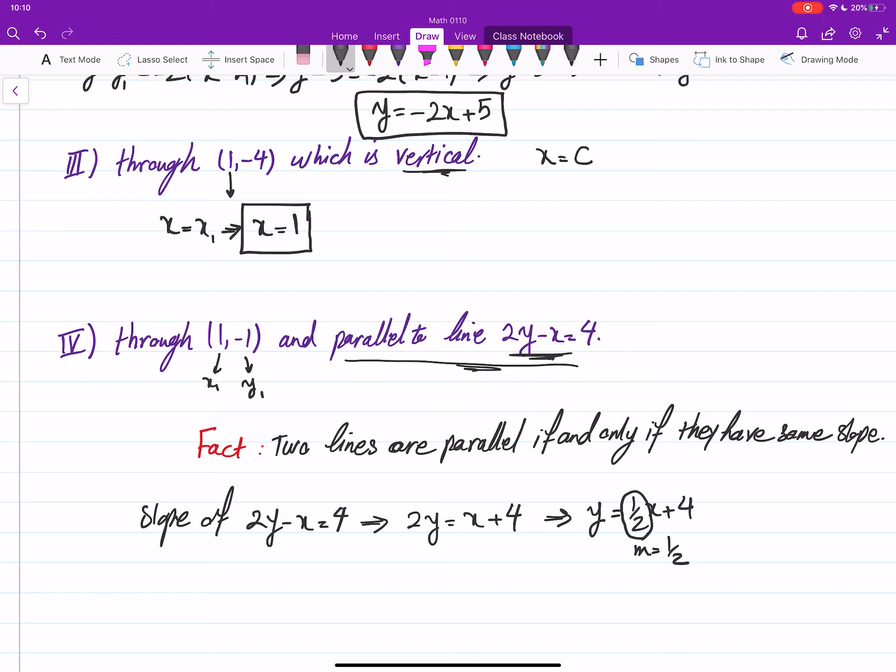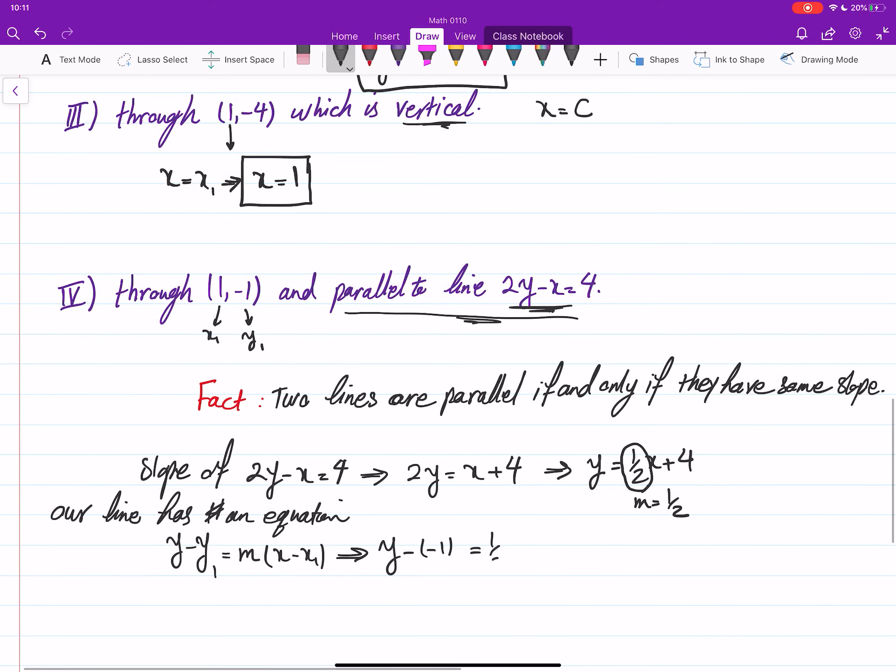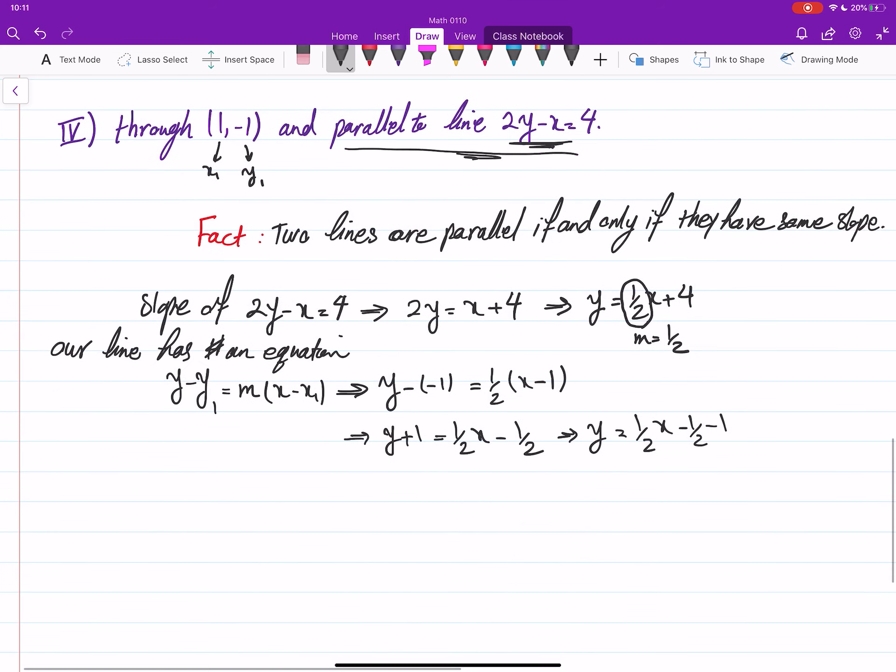Now that we found m is half, we can write the equation for our line. So y minus y₁ equals m times (x minus x₁). This gives us y minus (-1) equals half times (x minus 1). So this is y plus 1 equals half x minus half. Then take 1 to the other side: half x minus half minus 1. And as a result, we have y equals half x minus 3 over 2. That is what we have there.